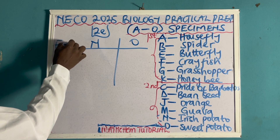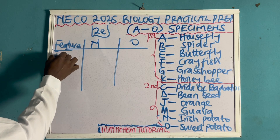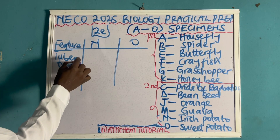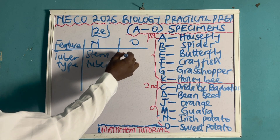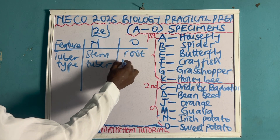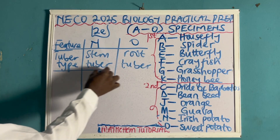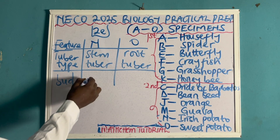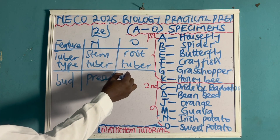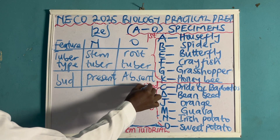Looking at their tuber type: Irish potato has a stem tuber, while sweet potato has a root tuber. Also considering their buds: Irish potato has the presence of buds, while sweet potato has the absence of buds.